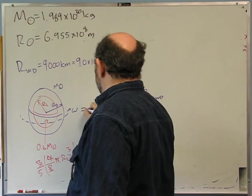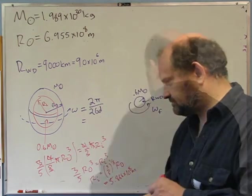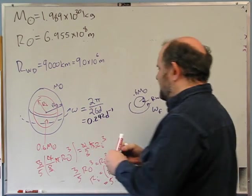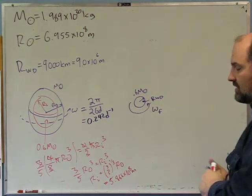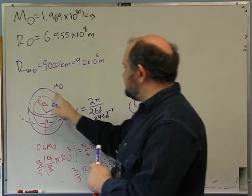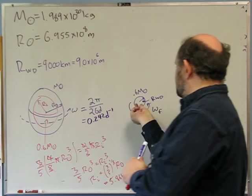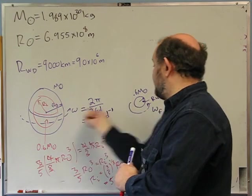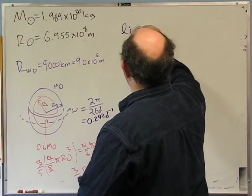The initial angular velocity omega equals 2π divided by 26 days, which is approximately 0.242 days⁻¹. The assumption is that the inner 60 percent collapses to form the white dwarf while conserving its angular momentum. So the initial angular momentum equals the final angular momentum: I_i times omega equals I_f times omega_f.